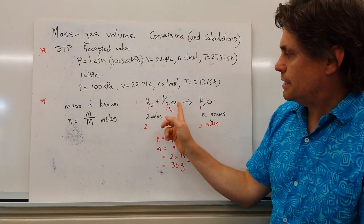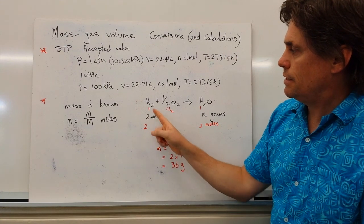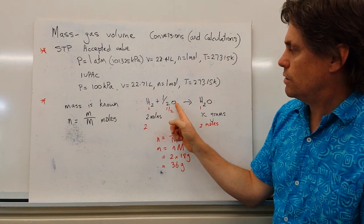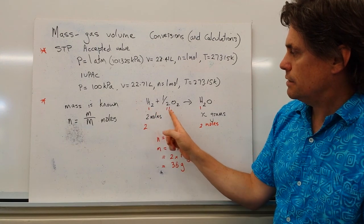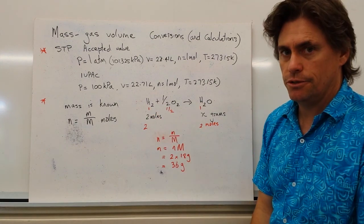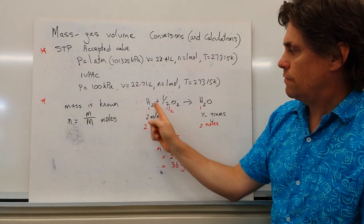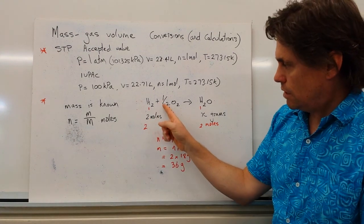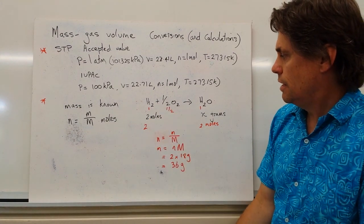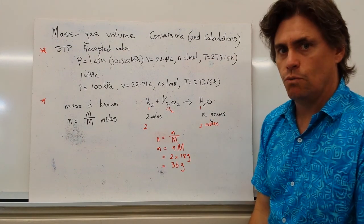So I haven't put our gases in here just to simplify things. But if we've got hydrogen reacting with oxygen to give us water, we have a one to a half to a one ratio. Let's say that I'm told that I have two moles of hydrogen reacting and it will be with one mole of oxygen. And we want to know how many grams of water we produce.